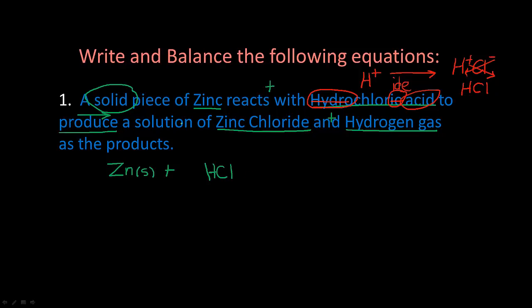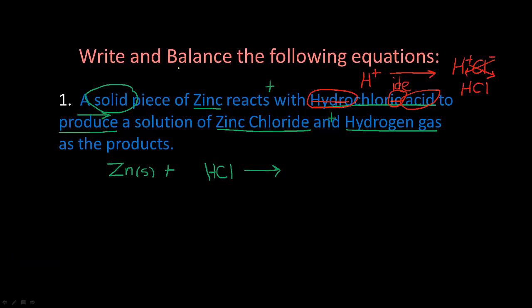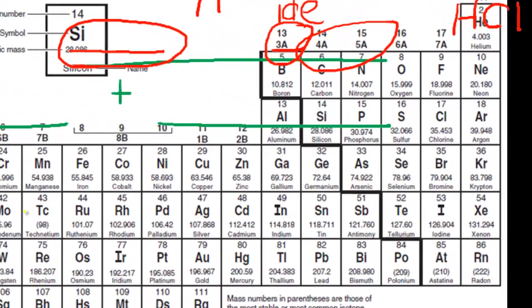Now it says 'to produce a solution,' so I know I have to put my yield arrow. Then 'a solution of zinc chloride' — we need to find what zinc chloride looks like. Zinc is Zn on the periodic table; it is a transition metal that does not change its oxidation number, and it has an oxidation number of plus two.